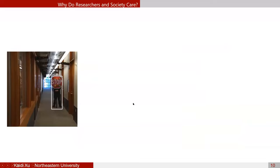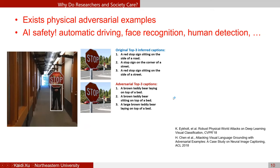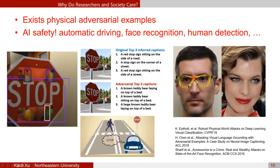In subsequent years, a well-known attack against object detectors involved placing stickers on stop signs to fool detectors effectively. Another example attacks face recognition: people wearing adversarial glasses can cause the face recognition system to classify them as a completely different celebrity, as long as that person is in the training dataset.